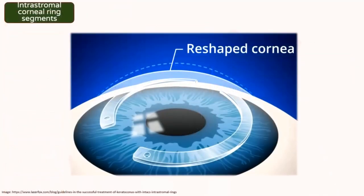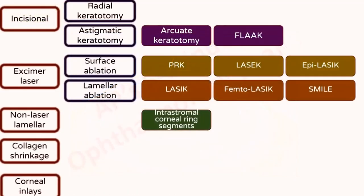Implantation of intrastromal corneal ring segments in the corneal stroma helps to flatten the central cornea. A variation in the number of segments, thickness, and timing can help in myopic astigmatism of keratoconus. However, this procedure cannot prevent progression of the ectasia associated with keratoconus, and hence combining it with collagen cross-linking produces better results.